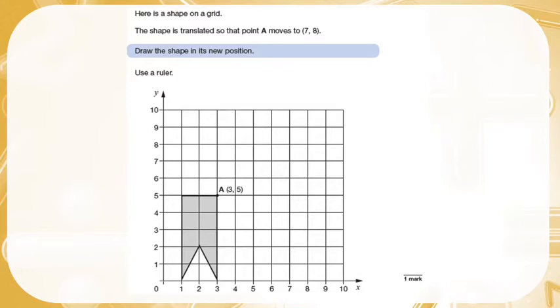Question number one: Here is a shape on a grid. The shape is translated so that point A moves to (7, 8). Draw the shape in its new position. Use a ruler.